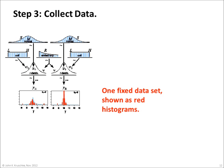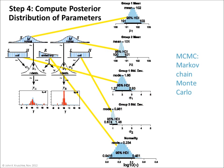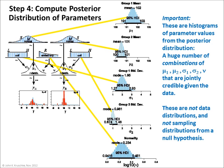The third step of Bayesian analysis is collecting the data. There is one fixed data set, shown as red histograms in the bottom of this diagram. The fourth step of Bayesian analysis is computing the posterior distribution over the parameters. The computer uses a method called Markov Chain Monte Carlo, or MCMC for short, to generate a large number — tens of thousands of representative credible parameter values. The more values generated, the higher resolution picture we have of the posterior distribution. These are histograms of parameter values from the posterior distribution — a huge number of combinations of mu1, mu2, sigma1, sigma2, and nu that are jointly credible given the data.